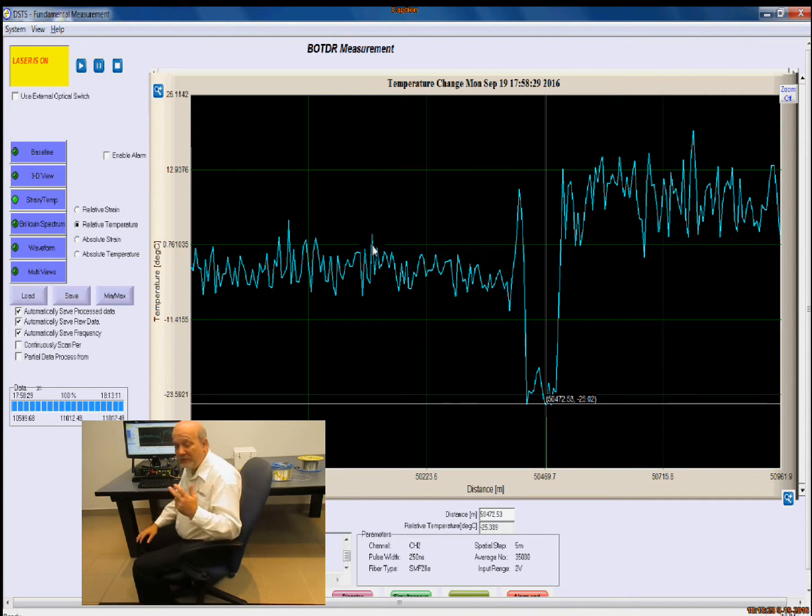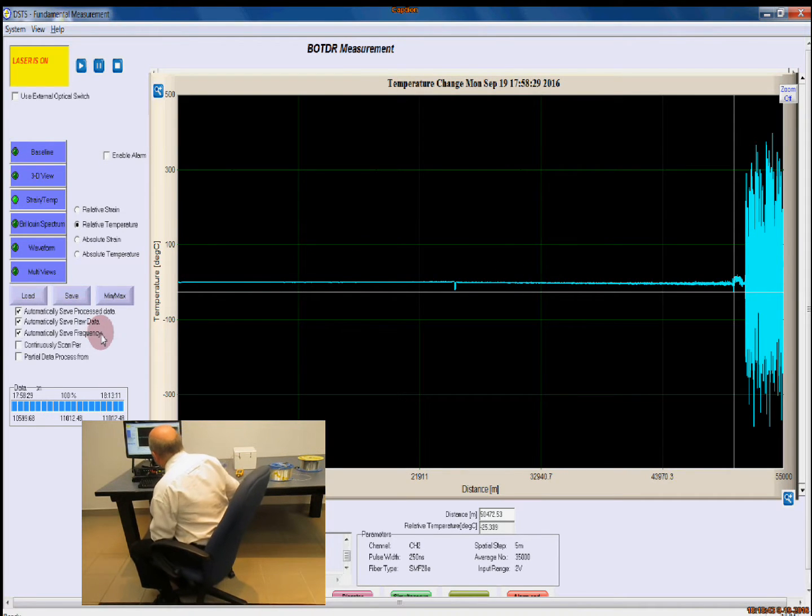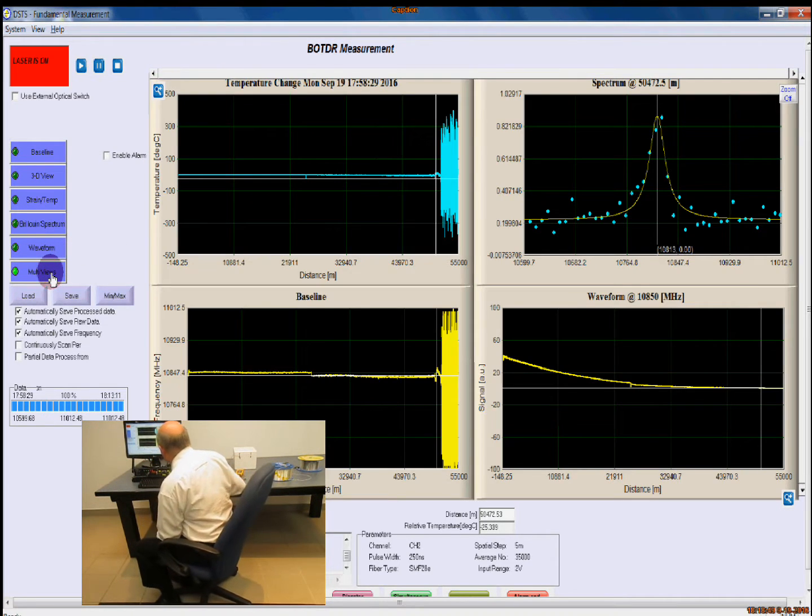To explain why we see this, let's take a look at the Brillouin spectrum itself. We'll zoom out, and let's bring up the multi-view, which allows us to see several different aspects of it, including our spectrum.